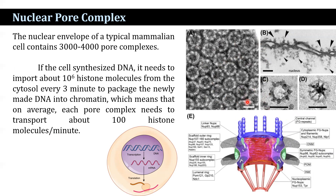If the cell synthesizes DNA, it needs to import about 10 to the power of 6 histone molecules from the cytosol every 3 minutes to package the newly made DNA into chromatin. That means, on average, each pore complex needs to import about 100 histone molecules per minute.